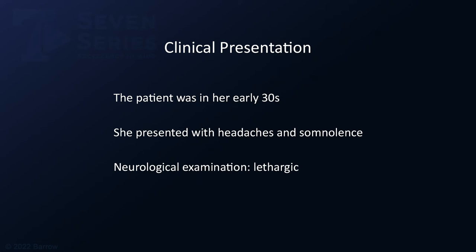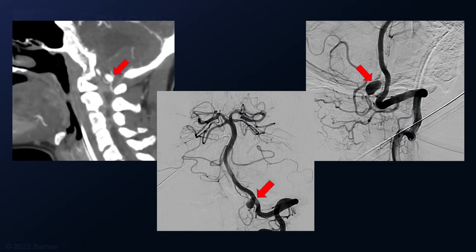The patient was in her early 30s and presented with headaches and somnolence. On neurologic examination, she was lethargic. Her CT angiogram showed a fusiform aneurysm of her left PICA with associated hydrocephalus and loculated subarachnoid fluid collections, suggesting prior rupture. The aneurysm measured approximately 1 cm on sagittal CT angiogram. Catheter angiography showed a fusiform dolicoectatic aneurysm with a small segment between the vertebral artery and the aneurysm and a large distal efferent artery.